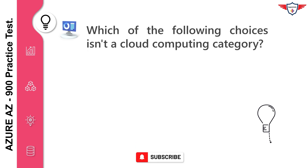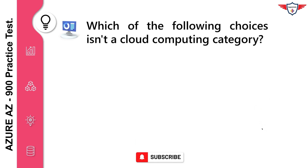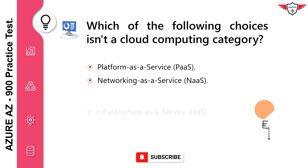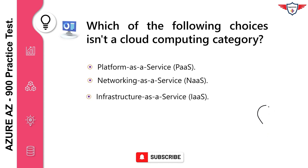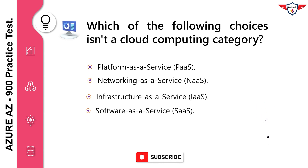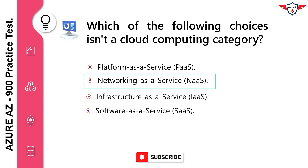Which of the following choices isn't a cloud computing category? Platform-as-a-service. Networking-as-a-service. Infrastructure-as-a-service. Software-as-a-service. The correct answer is networking-as-a-service. Networking-as-a-service isn't a cloud computing category.